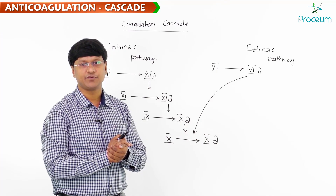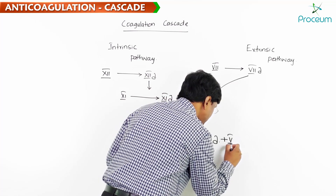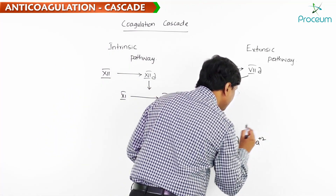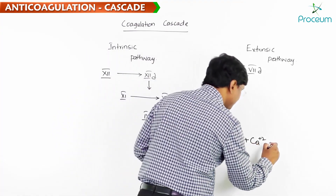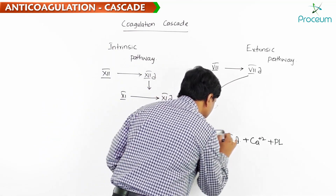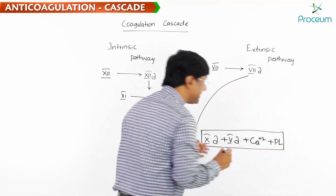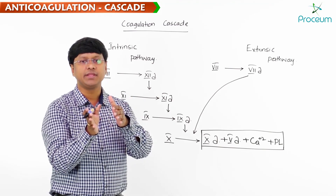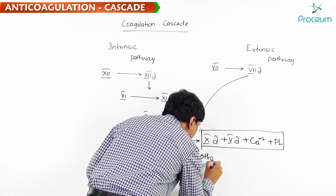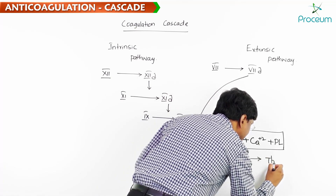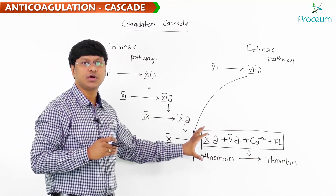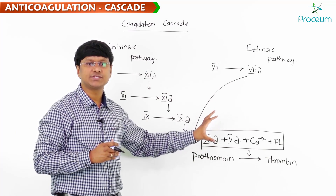This activated form of factor 10A, together with the activated form of factor 5, calcium, and phospholipids, forms an entire complex. This entire complex will convert prothrombin to thrombin. This particular pathway is called the common pathway — the conversion of prothrombin to thrombin.